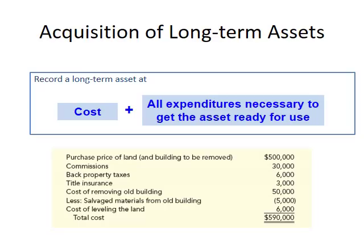When you remove the old building you have some salvage materials — you can sell those to another entity and receive $5,000. This reduces the net cost, so we record it as a negative number. You also incur $6,000 to level the land. In total, the original purchase price is $500,000 plus additional expenditures, making the total cost of the land $590,000. The journal entry is: debit land $590,000 and credit cash $590,000.